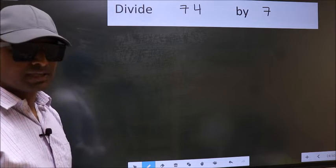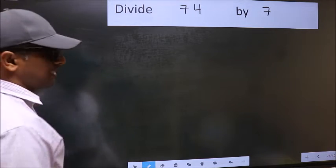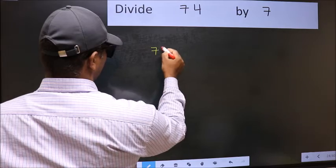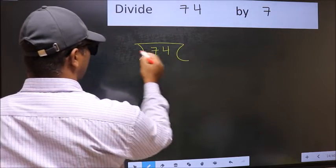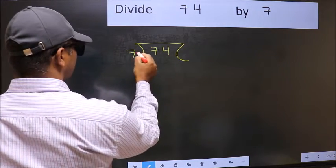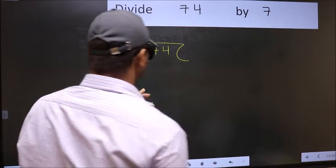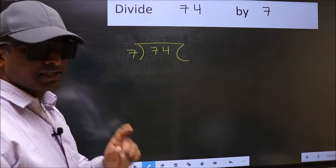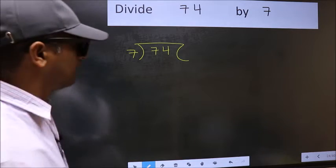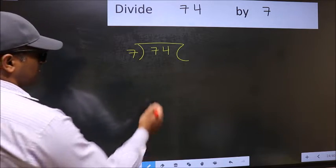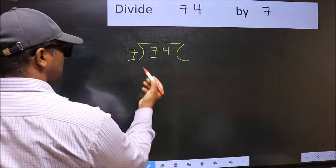But before that, we should frame it in this way: 74 and 7 here. This is your step 1. Next, here we have 7 and here also 7.